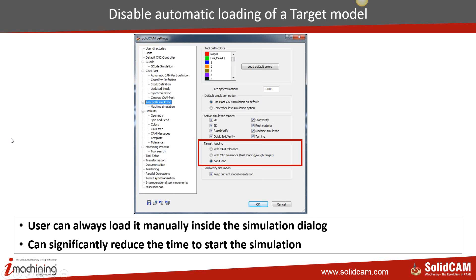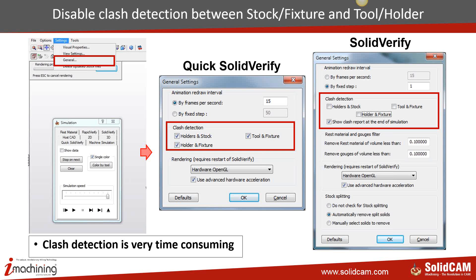Another optional setting is to disable clash detection between stock, fixture, or tool holder. I know not everyone will agree, but it can be disabled if you know you've selected the right tool length and holder, and your toolpaths are not likely to hit the fixture. Switching off some or all of these clash detection values can significantly improve your simulation time.